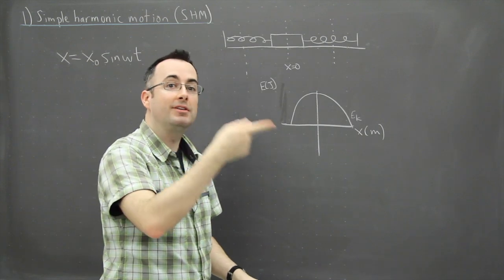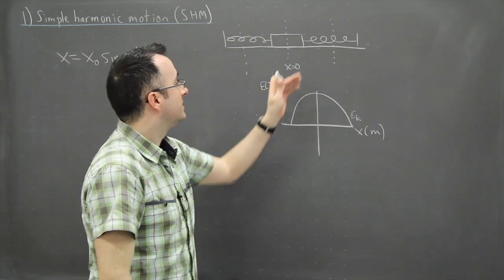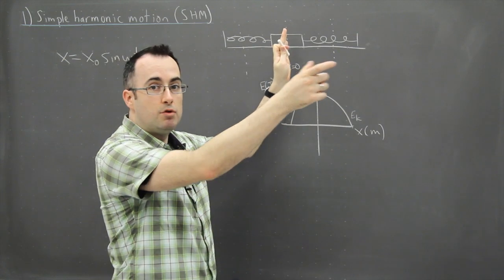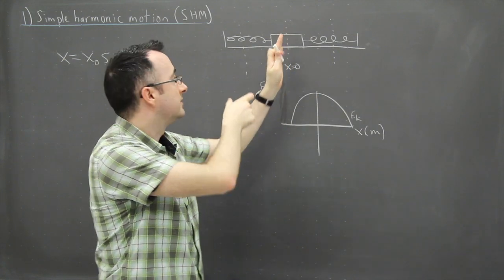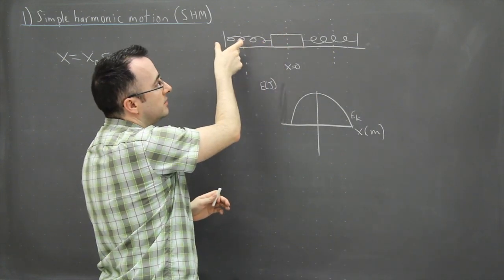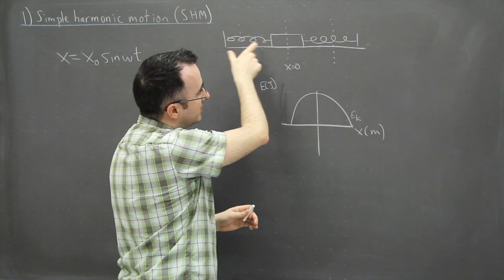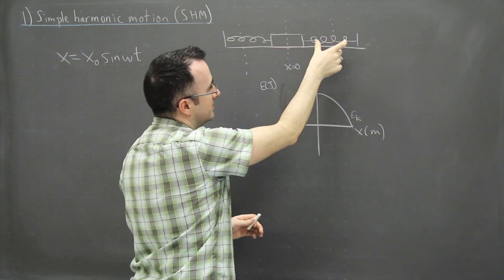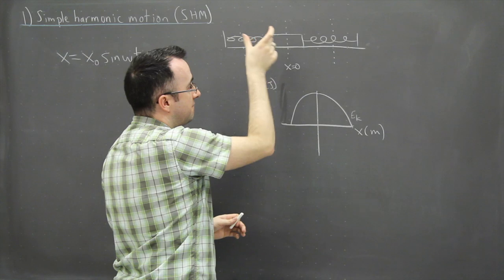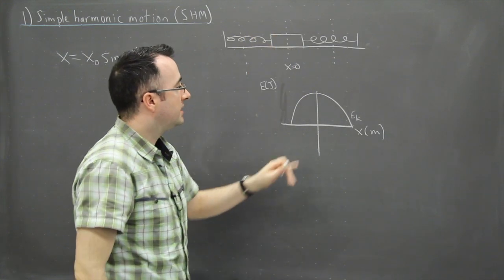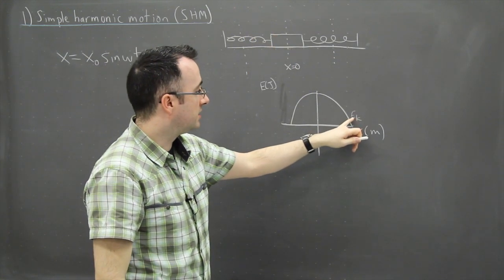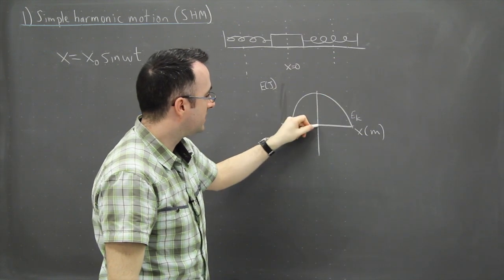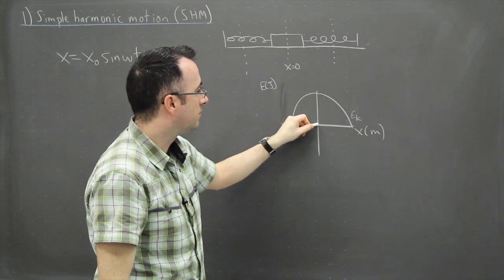That should make sense from what we looked at before: at x equals zero, that's when it's moving the fastest. Over at the ends it's stopped, then it turns around and travels as fast as it can right at the center, then slows down and stops again. So the maximum kinetic energy — the highest value EK reaches — is at x equals zero.